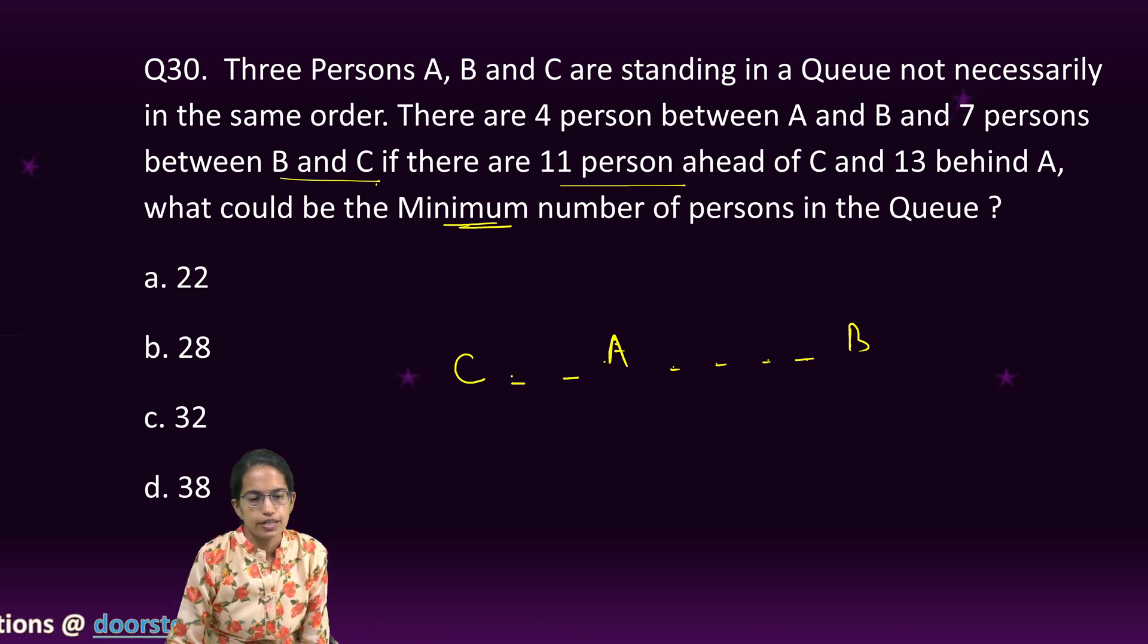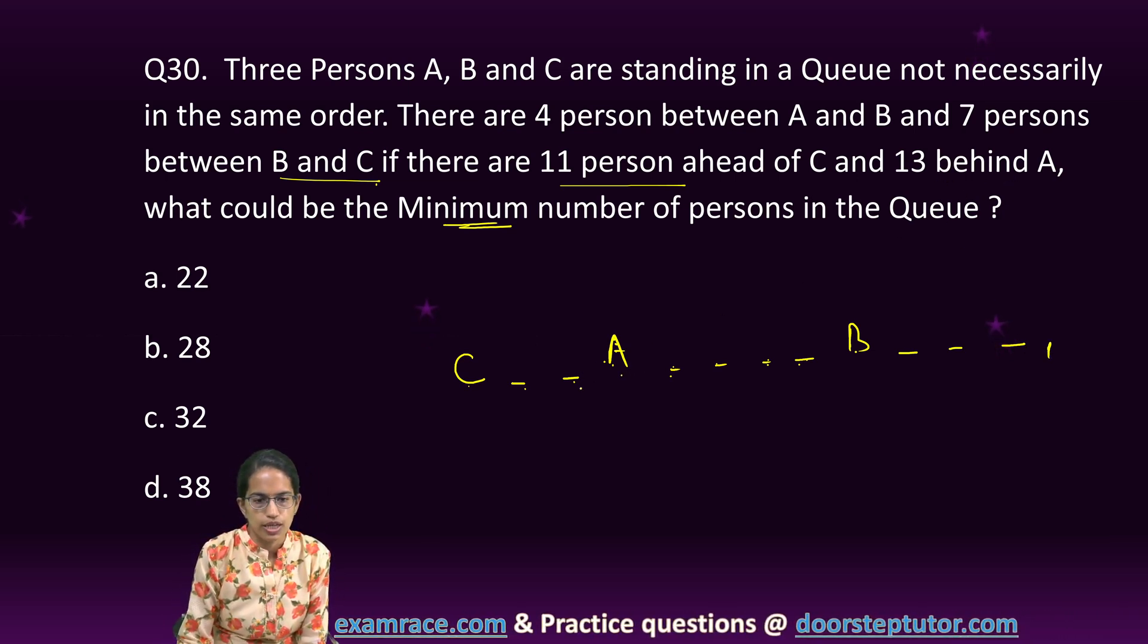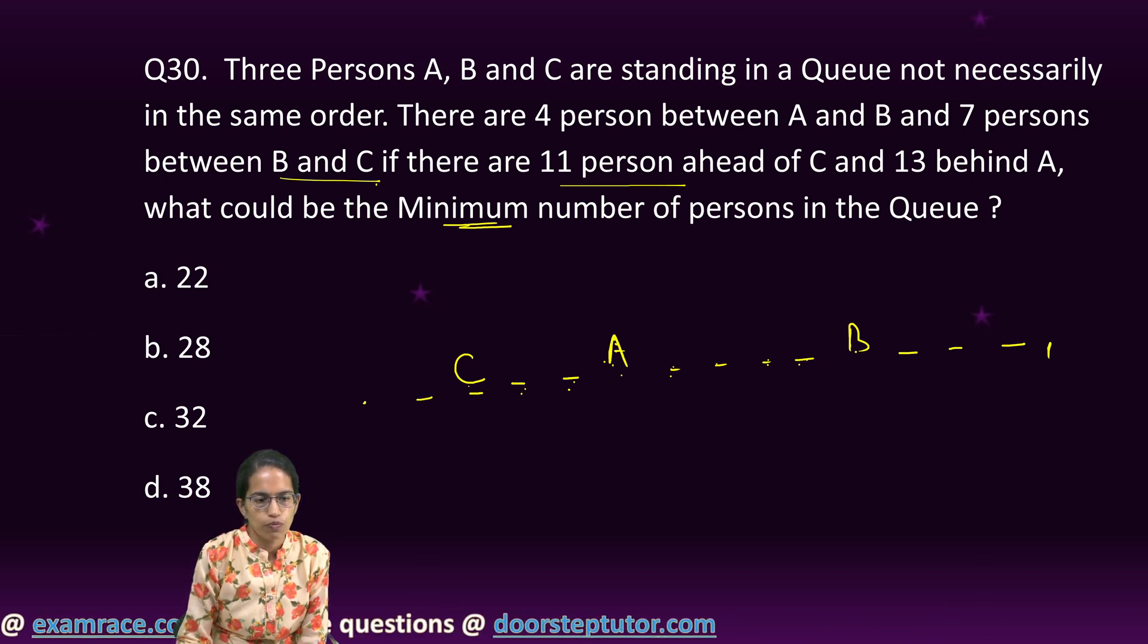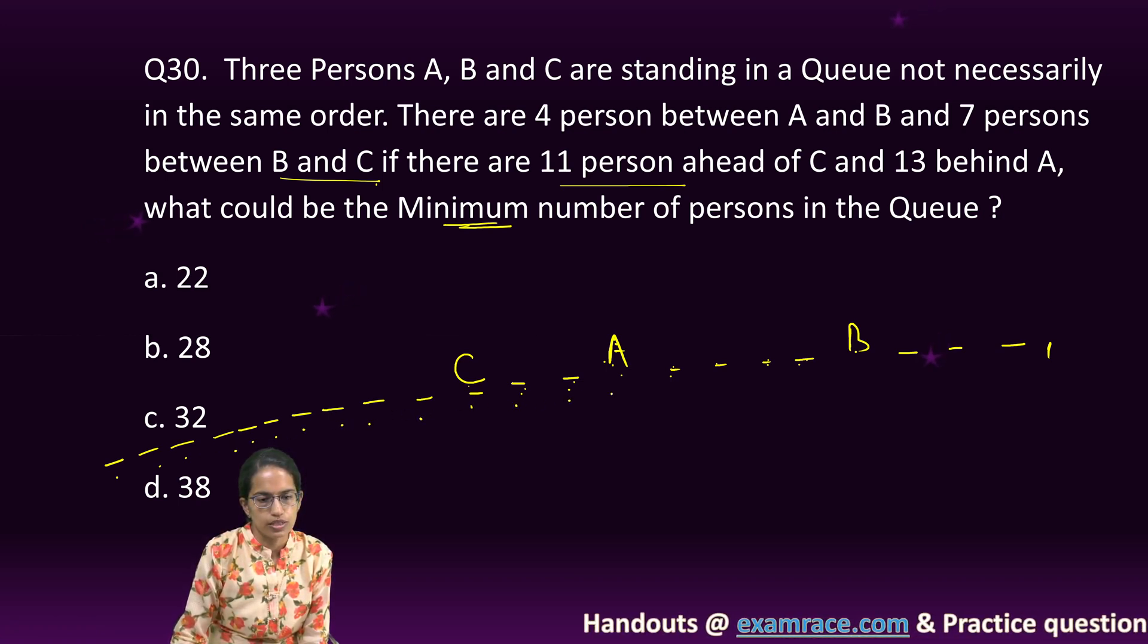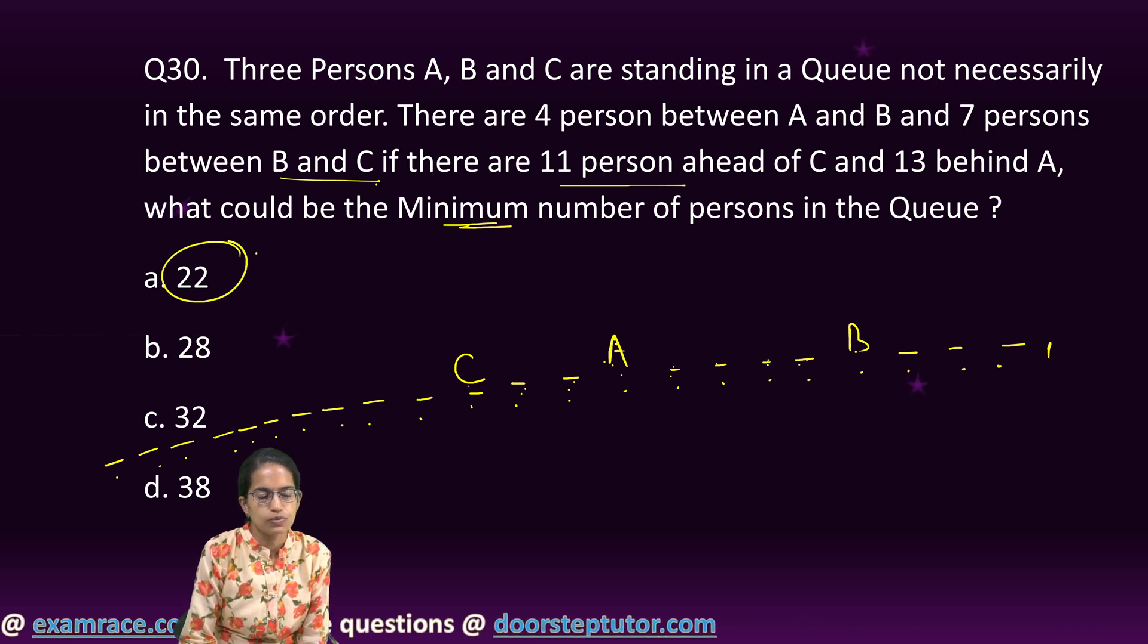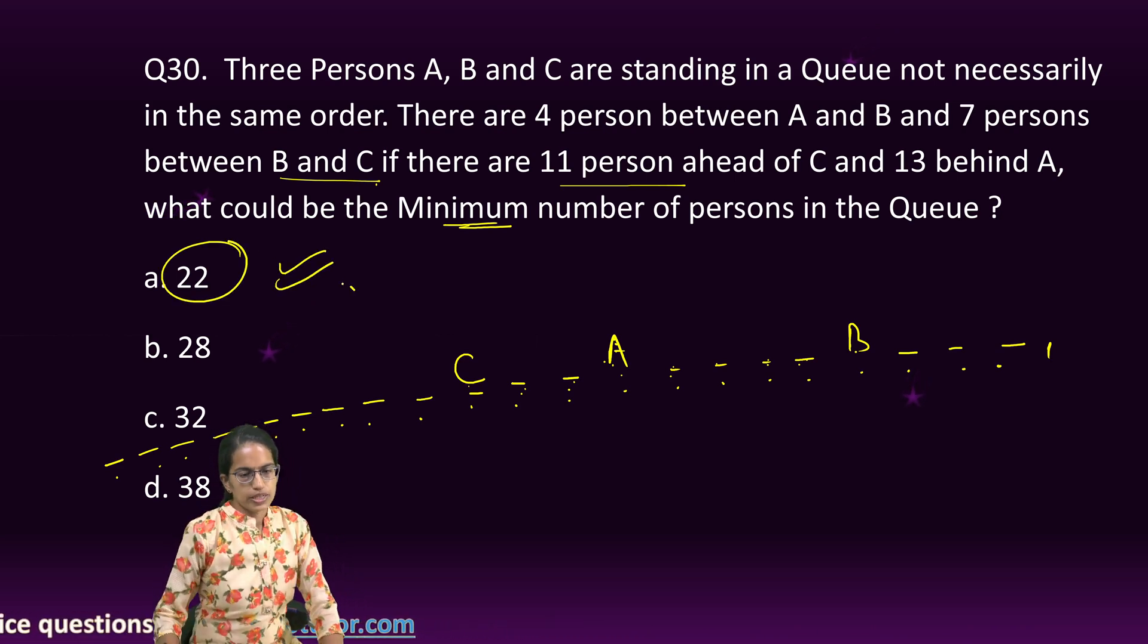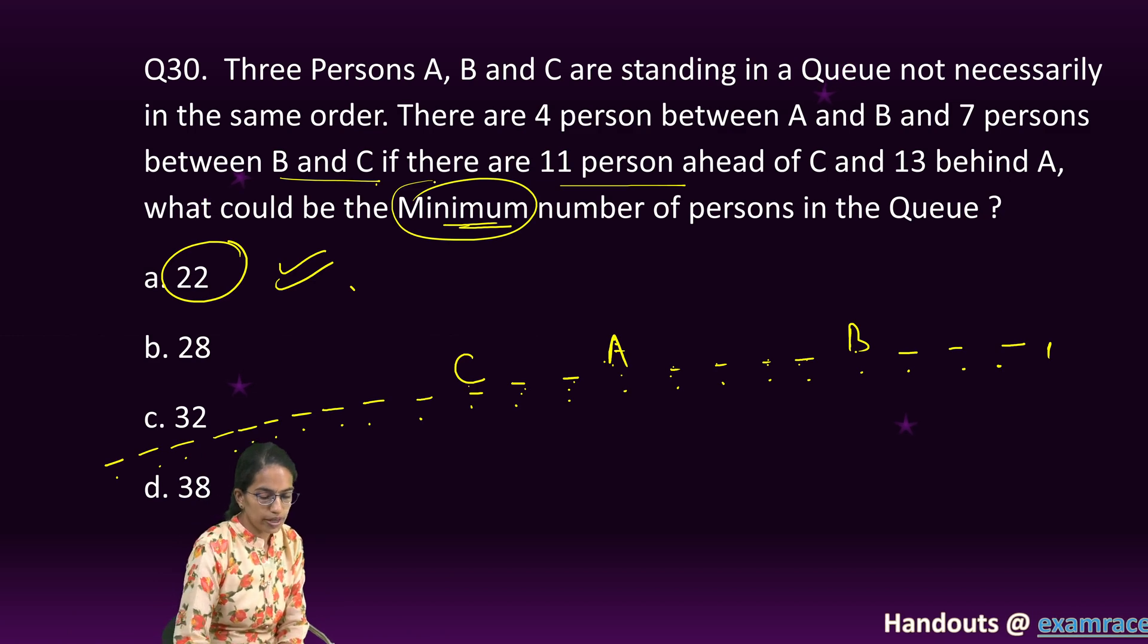Now, if there are 11 persons ahead of C. So, after C, one, two, three, four, five, six, seven, eight, nine, ten, eleven. And then, you have the person here. And 13 person behind A. So, A, one, two, three, four, five, six, seven, eight, nine, ten, eleven, twelve, thirteen, fourteen, fifteen, sixteen, seventeen, eighteen, nineteen, twenty, twenty-one, twenty-two. So, my answer becomes twenty-two. And that's how you calculate. I could have taken C on the other side. But then, I would not have got the minimum number. Our intent is to find the minimum number.